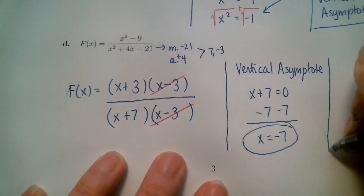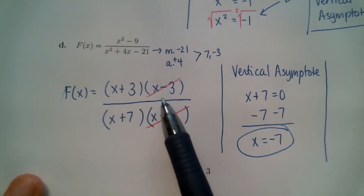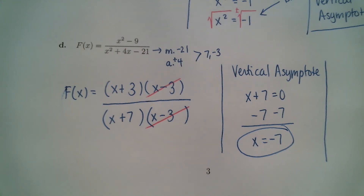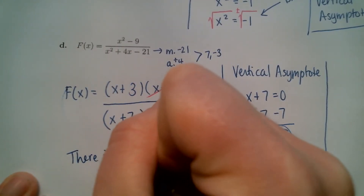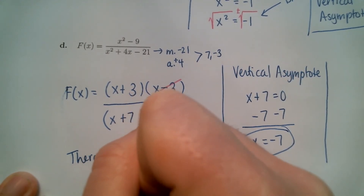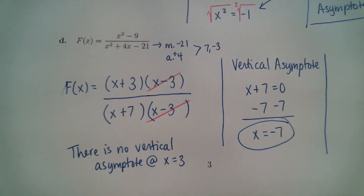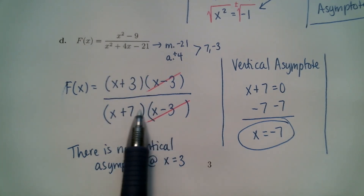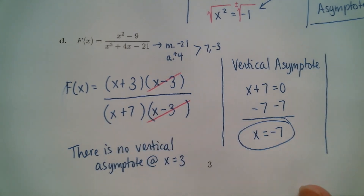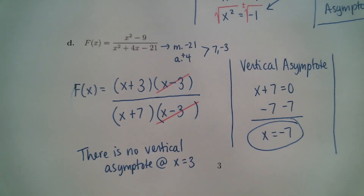I want to go a step further and explain what happened with this cancellation. Because we can cancel, there is no vertical asymptote at x equals 3. But something does happen at x equals 3 — it's just not a vertical asymptote. Both negative 7 and positive 3 are not in the domain because they make you divide by zero. The domain of this function is all real numbers except x equals negative 7 and x equals positive 3.